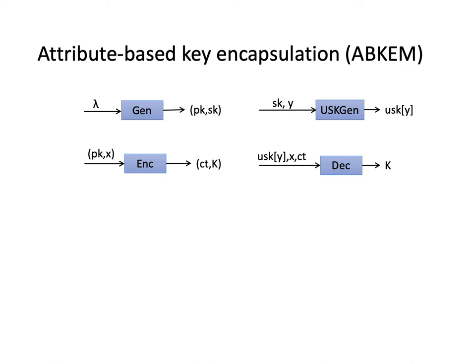The first one is GEN, which takes as input the security parameter lambda and outputs a public key pk and a secret key sk. The user key generation algorithm takes as input a secret key sk and a value y and outputs a user secret key usk_y. The encryption algorithm takes as input the public key, a value x, and outputs a ciphertext and also a session key. The decryption algorithm takes as input the user secret key, a value x, and a ciphertext ct and outputs the session key. Correctness holds if the session key k can be correctly recovered by dec, which is the decryption algorithm, if p(x,y) is equal to 1. Here p is the boolean predicate.